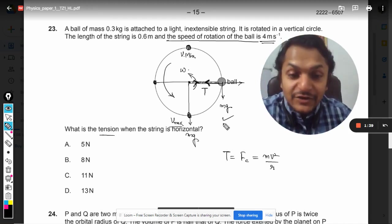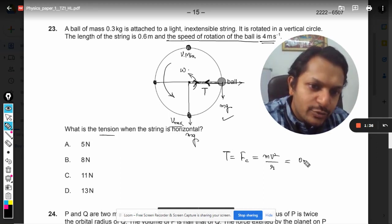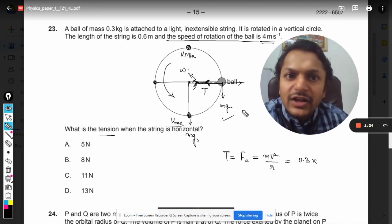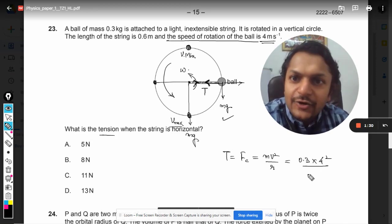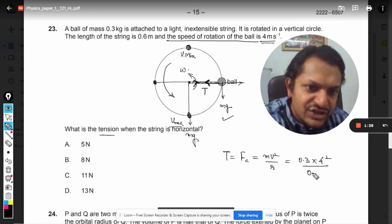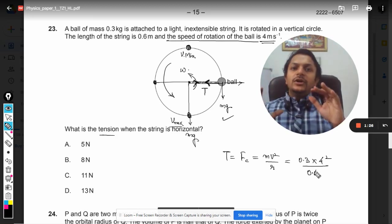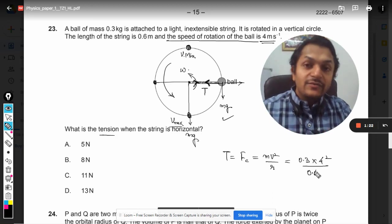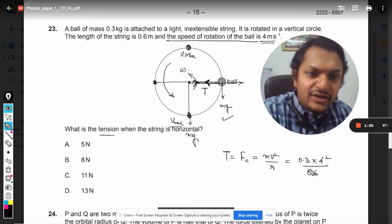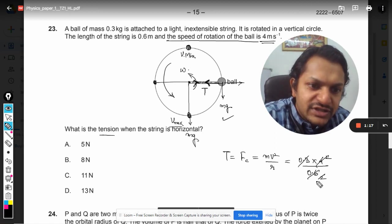The mass is 0.3, the velocity is given as 4 and it is constant, and the radius is given as 0.6 meter. We have confirmed that all the values are in SI units, so we can just substitute the values and get the answer. It will be 0.3 times 16 divided by 0.6, which is coming out to be 8 Newton.